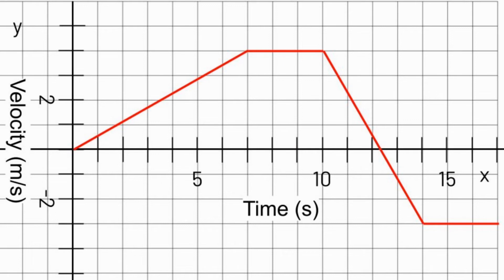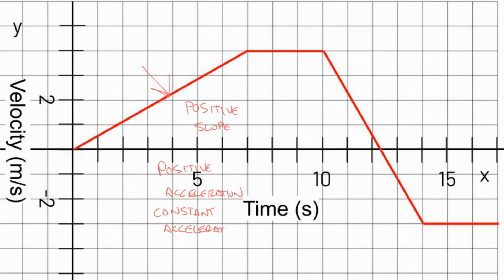Let's look at another example of a velocity-time graph. In this section of the graph, we have a positive slope, which means we have positive acceleration. This is a constant slope, so this is a constant acceleration. The velocity is increasing — it's getting bigger.